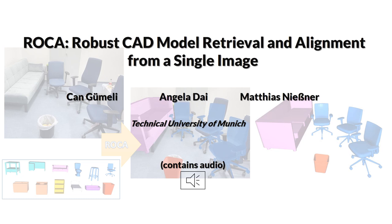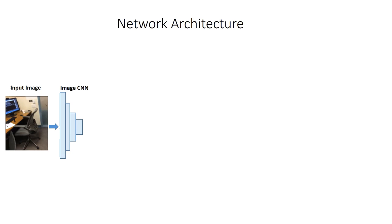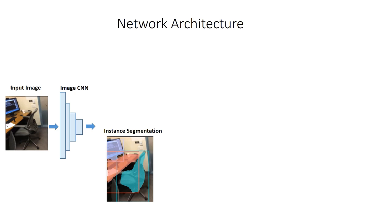We present Roka, robust CAD model retrieval and alignment from a single image. From an input RGB image, our method first extracts multi-scale features from a deep convolutional backbone. Then we perform instance segmentation to understand the 2D semantics of the objects.